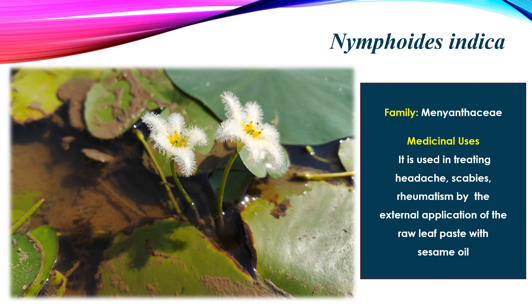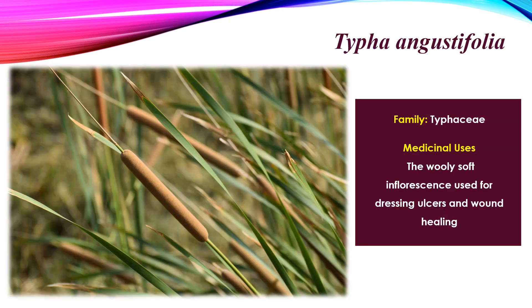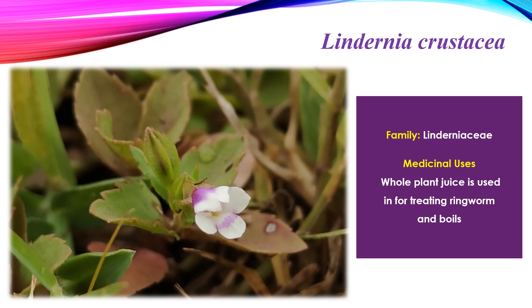Next is a grass-like plant belonging to the family Typhaceae, but it is not a grass. The name of this plant is Typha angustifolia. This plant is used in dressing ulcers and wounds. The inflorescence is very soft and woolly, and this woolly soft inflorescence is used in treating many diseases and disorders.